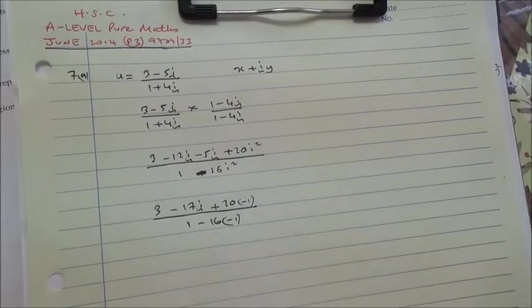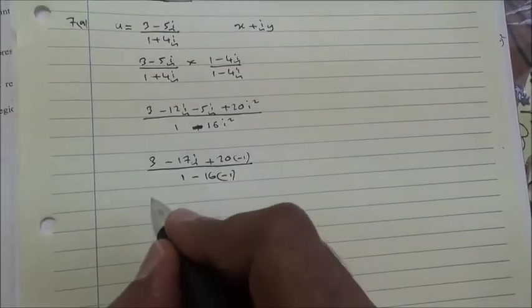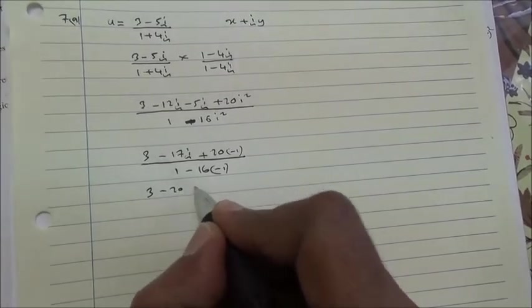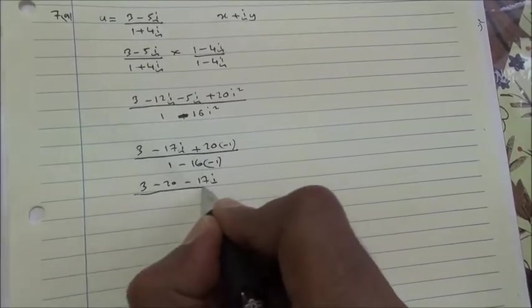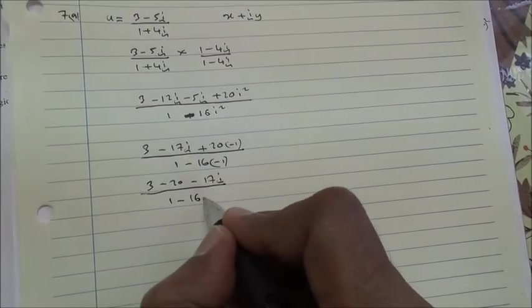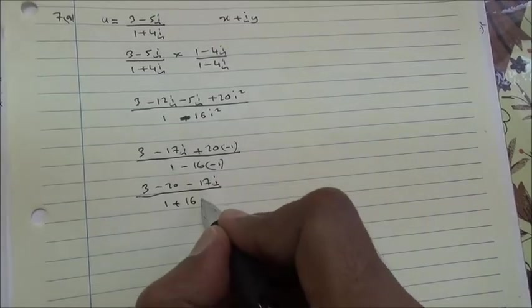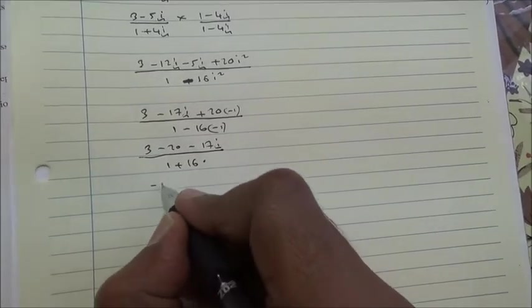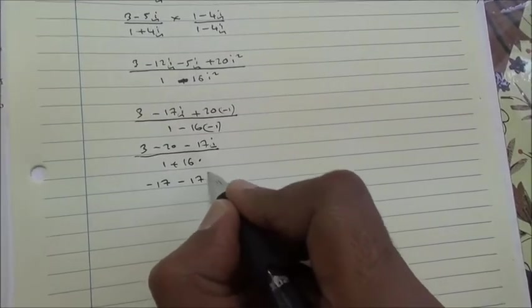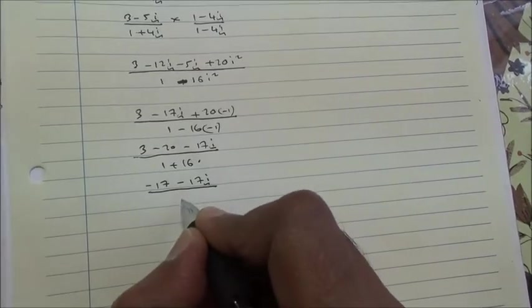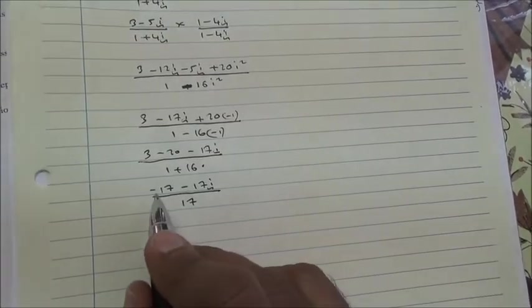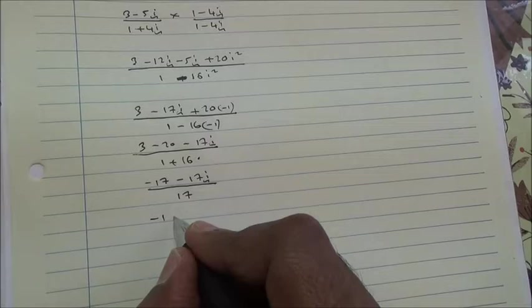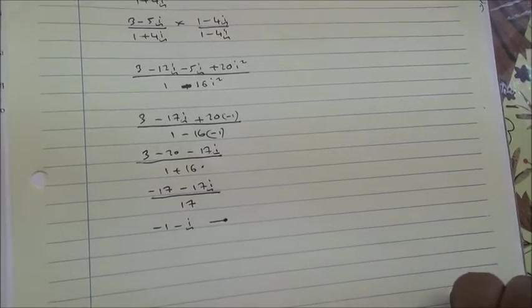So, divide it by 1 minus 16 times i squared. i squared is minus 1 again. 3, 20 times minus 1 is minus 20. Minus 17i divided by 1 plus 16. 3 minus 20 is minus 17. Minus 17i divided by 1 plus 16 is 17. So, minus 17 divided by 17 is minus 1. Minus 17i divided by 17 is minus i. And here we are for the first part.